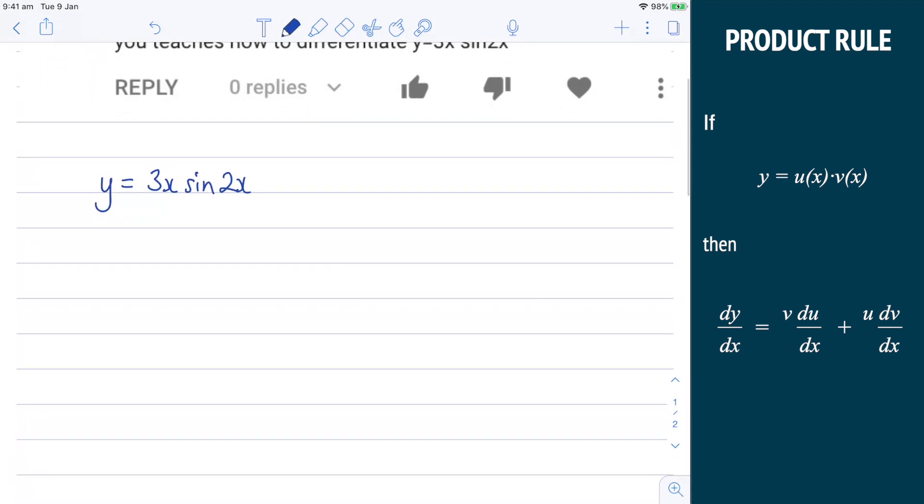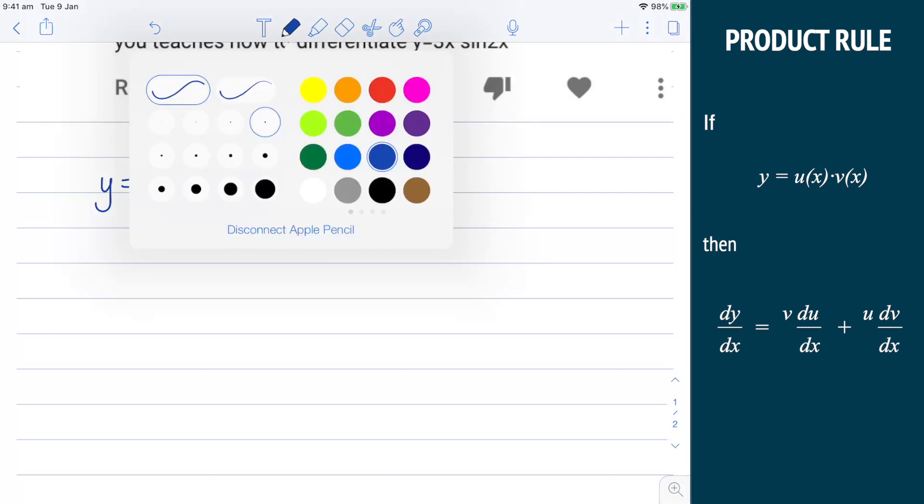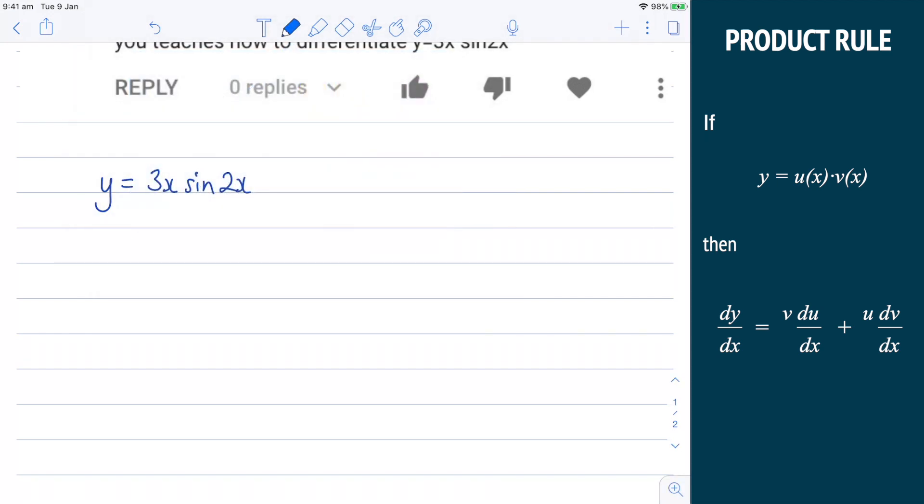So I'm going to start this question. Just let me grab a different colored pen here. And what I'm going to do, I'm going to say I want to let u equal 3x. I'm going to go ahead and differentiate that. So du by dx is simply 3.